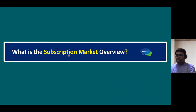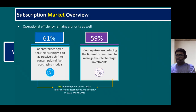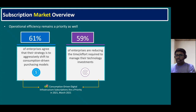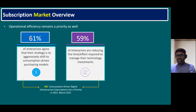Another question is: what is the subscription market overview? We need to familiarize ourselves with the subscription model, because nowadays most clouds run on subscription-based models only. Based on IDC research — which is publicly available from the IDC website — operational efficiency remains a priority. According to IDC research, 61% of enterprises agree that their strategy is to aggressively shift to consumption-driven purchasing models.